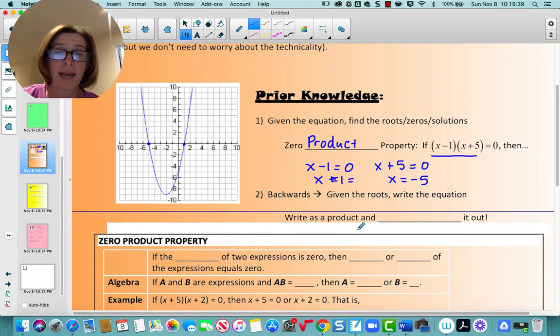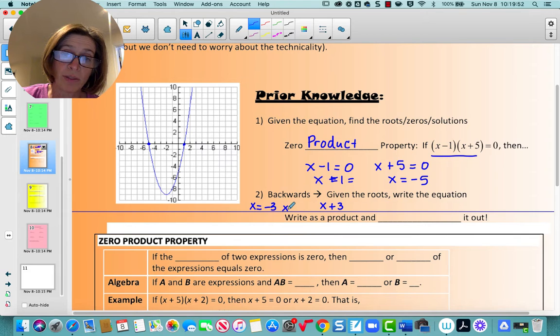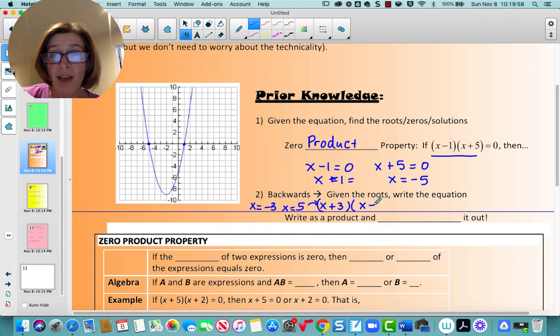We're also going to look at, given the roots, writing the equation. So that would be a situation where I tell you that x equals negative three and x equals five. So you'd write them as factors. So x plus three and x minus five. And you would write it as a product and multiply it out. So we're going to be going through that today as well.